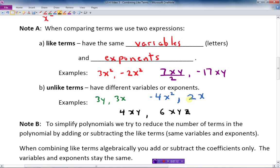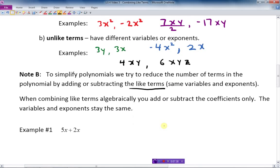Okay, so I hope that makes sense. That's really important. Go ahead with the next part of this lesson. So to simplify polynomials, we try to reduce the number of terms in the polynomials by adding or subtracting the like terms. So the key is the like terms, the ones with the same variables and exponents. And so that's what we did above with those pictures, just the things that were like terms, like shapes, in other words. We combine those. When combining like terms algebraically, you add or subtract the coefficients only. The variables and exponents stay the same.